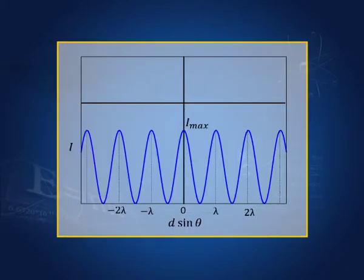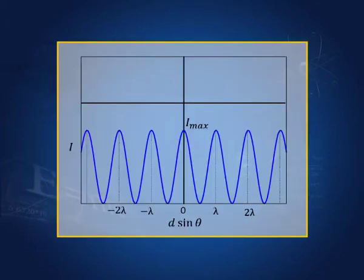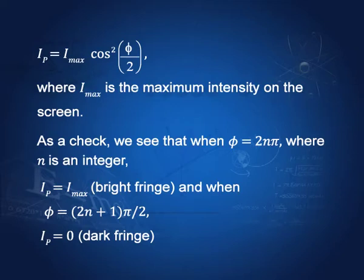Plotting Ip as a function of d·sinθ — since φ = 2πd·sinθ/λ and 2π/λ is constant, φ is effectively proportional to d·sinθ — we see intensity at its maximum for bright fringes and zero for dark fringes. Bright fringes occur when the path difference equals λ, 2λ, etc., and dark fringes when the path difference equals λ/2, 3λ/2, etc. At a dark fringe Ip = 0; at a bright fringe Ip = Imax.